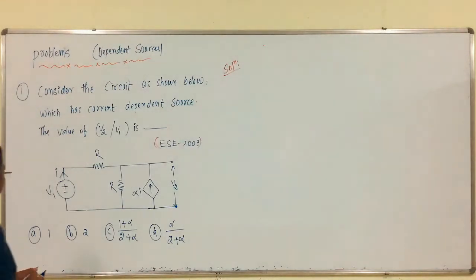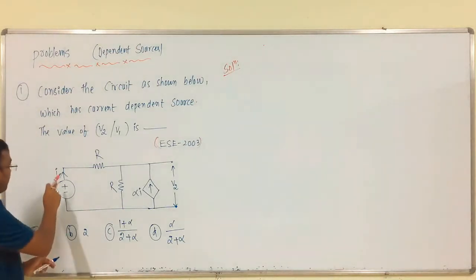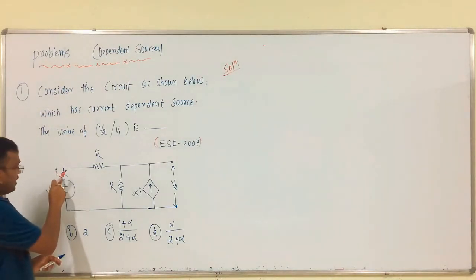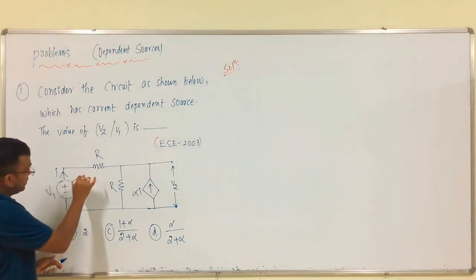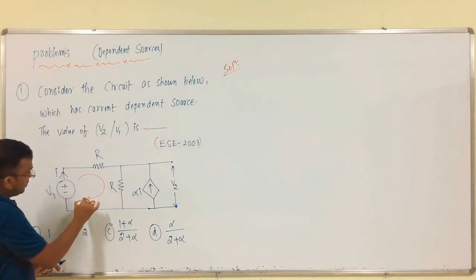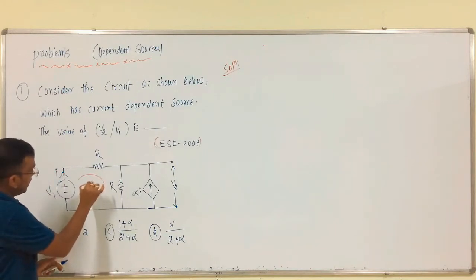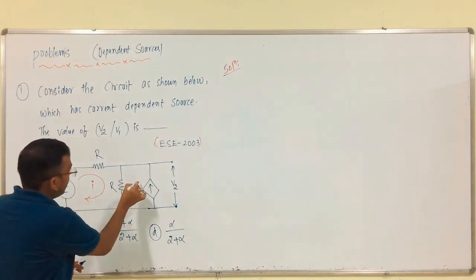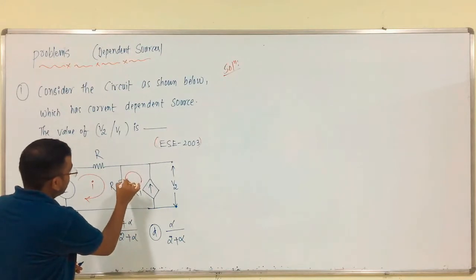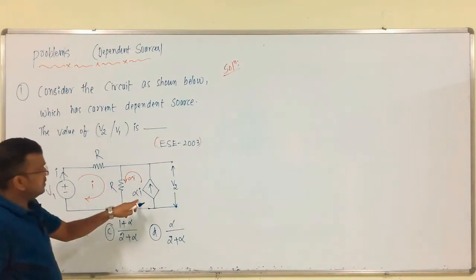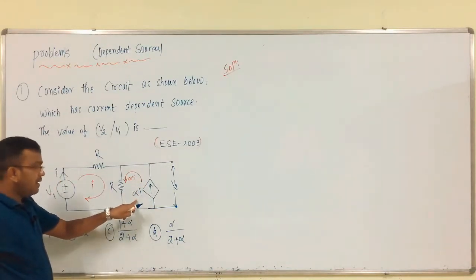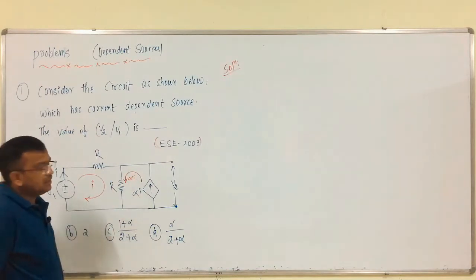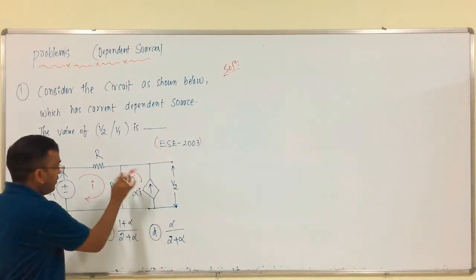By default, the examiner provides the current direction in loop 1, that is I. Alpha I is the current dependent current source — this is alpha I.